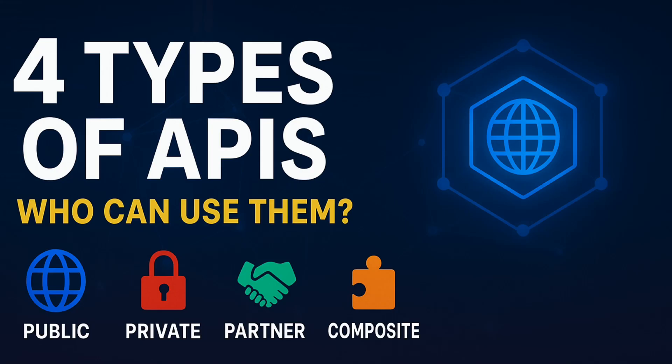There are four types of APIs by access: public API, private API, partner API, and composite API.